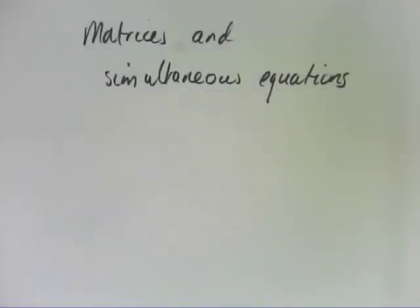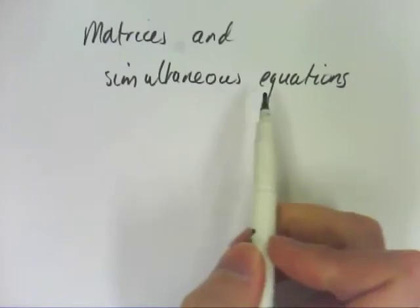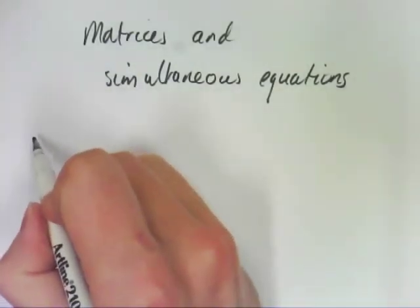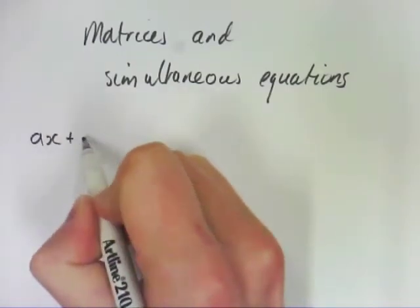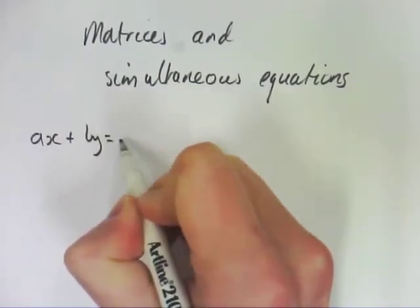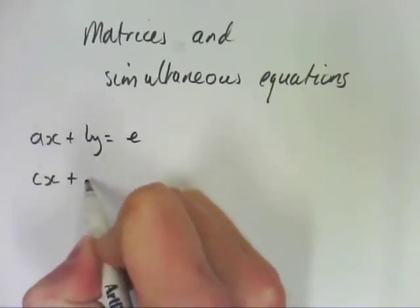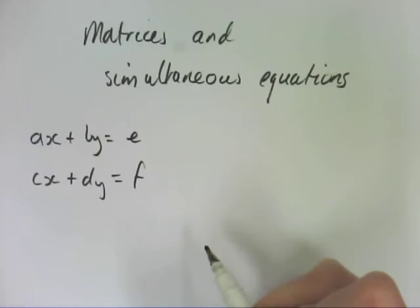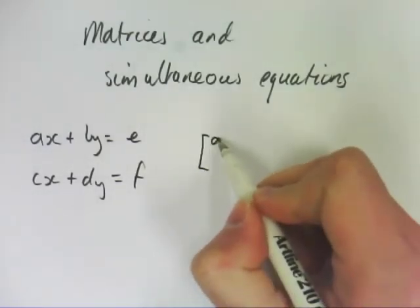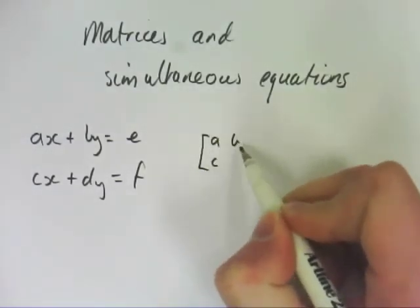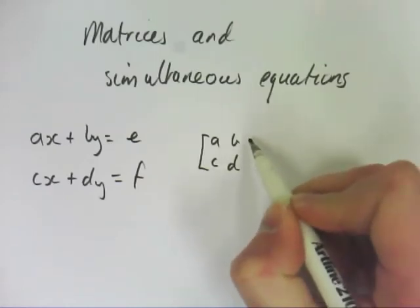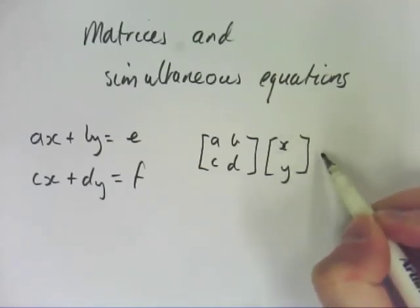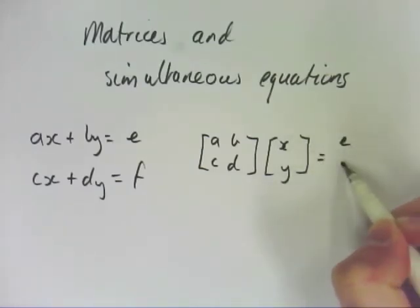Building on solving equations, you can actually solve simultaneous equations with matrices. For example, if we had two equations AX plus BY equals E and CX plus DY equals F, you can write that out in matrix form where you have A, C, B, D, X and Y equals E and F.